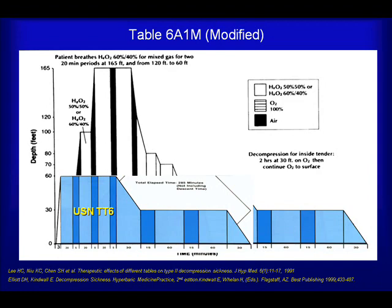A combined table approach involves compressing to 18 meters for 20 minutes; if the diver continues to deteriorate, switching to COMEX 30 at 30 meters for 20 minutes; if still deteriorating, switching to US Navy Treatment Table 4 at 50 meters or 6 atmospheres. Failing recovery at 18 meters may then lead to saturation decompression or a US Navy Treatment Table 6 if appropriate recovery has occurred. This approach should not be undertaken without experienced staff and a highly specialized treatment facility.